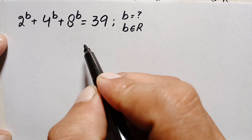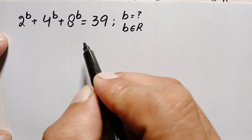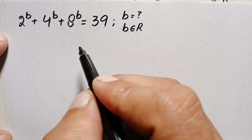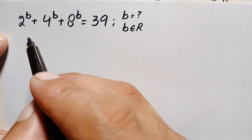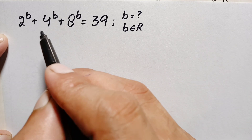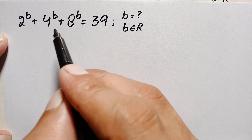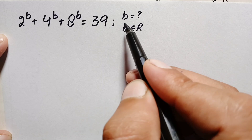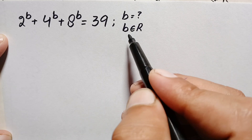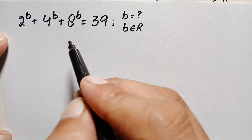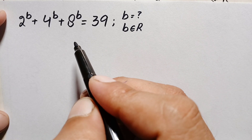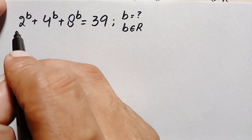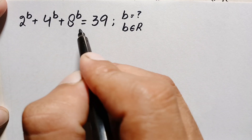Hello everyone, you are welcome. Today we have a new beautiful exponential math problem: 2 raised to power b, plus 4 raised to power b, plus 8 raised to power b is equal to 39. Here we will try to find the real solutions of this problem. So let's start our solution.